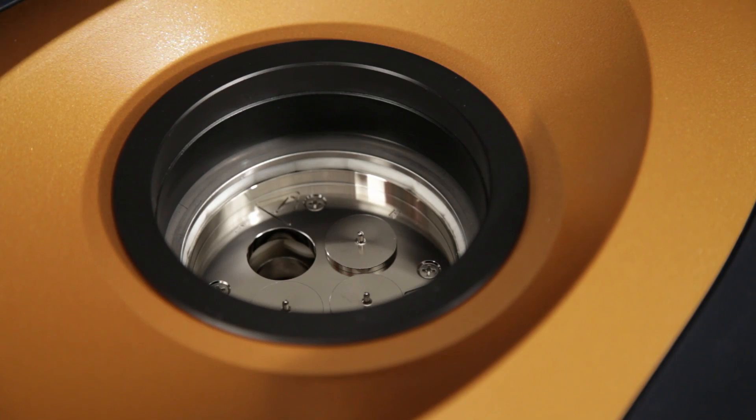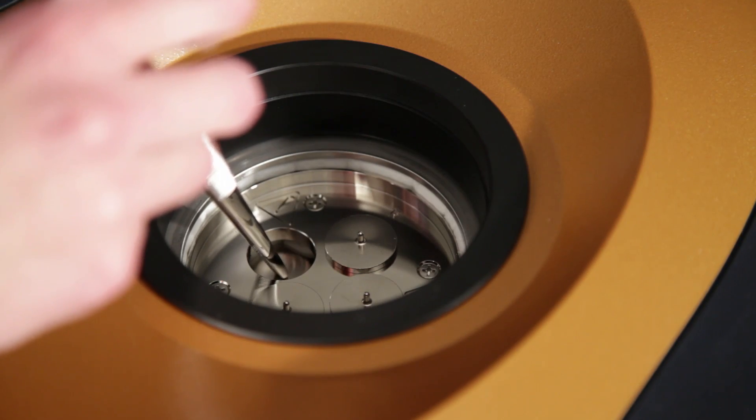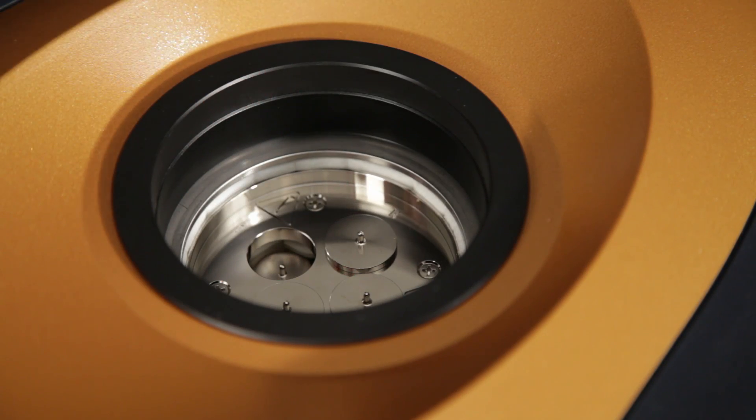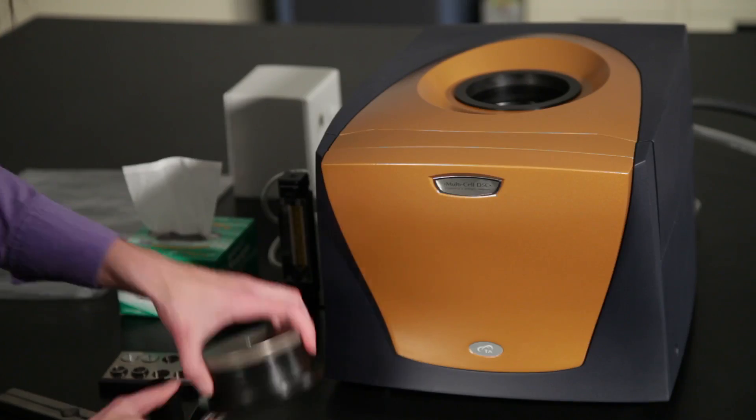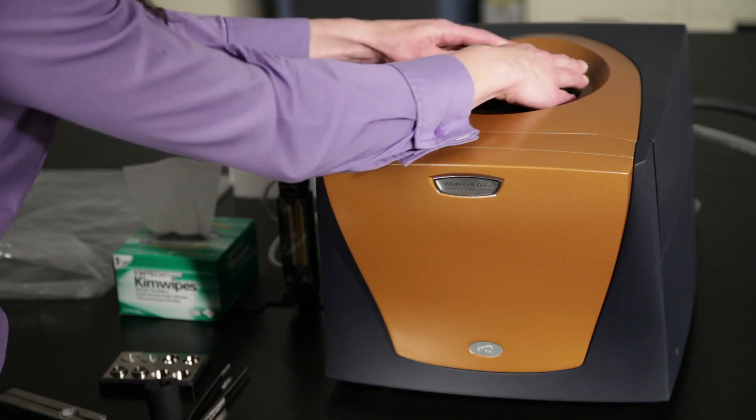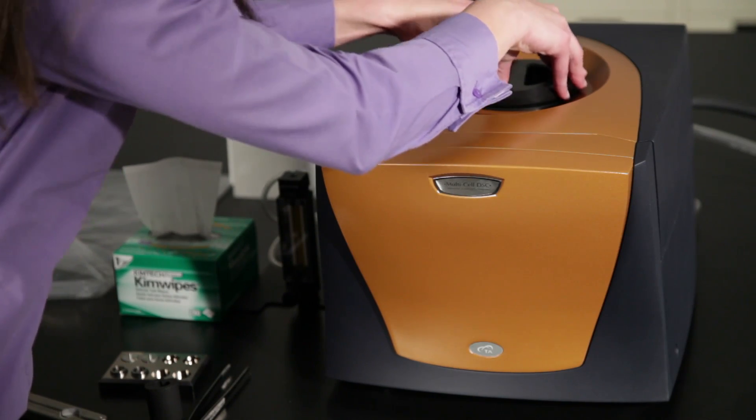Then replace the inner shunt lid and the outer shunt lid. At this time the entire lid can be placed back onto the instrument and snugly fitted down.